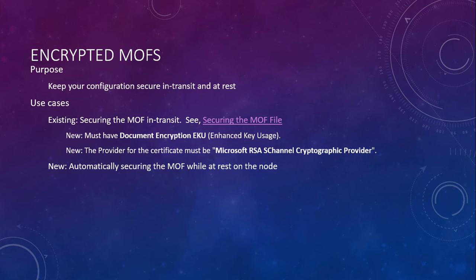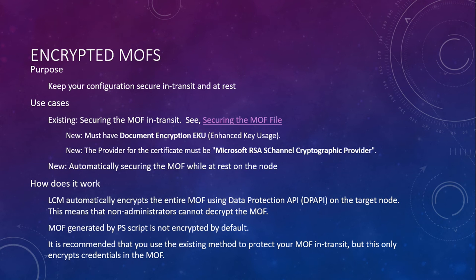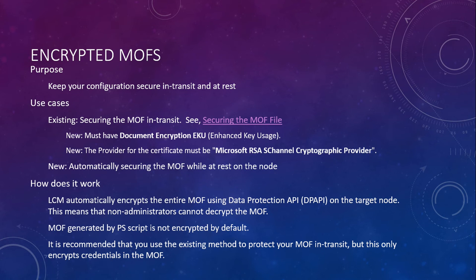What's new is there's a new requirement for Document Encryption EKU, and the provider for the certificate must be the Microsoft RSA SChannel Cryptographic Provider. This is important to know if you're moving from WMF 4 because we did make a breaking change. The big feature is that we automatically encrypt the entire MOF while at rest on the node once it gets there in WMF 5.